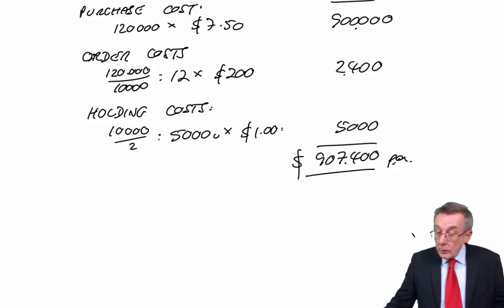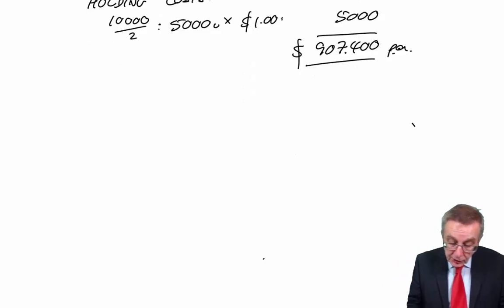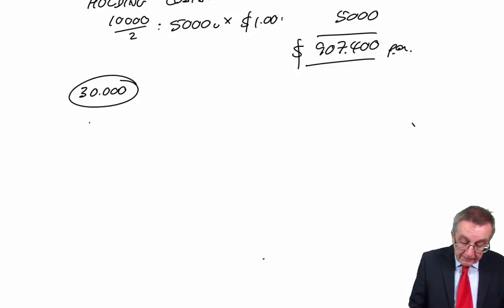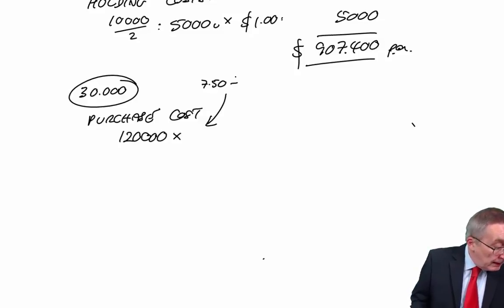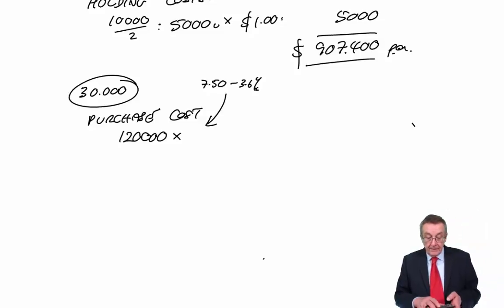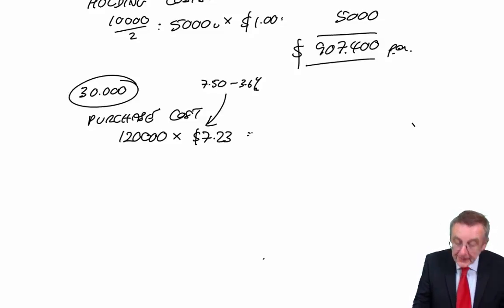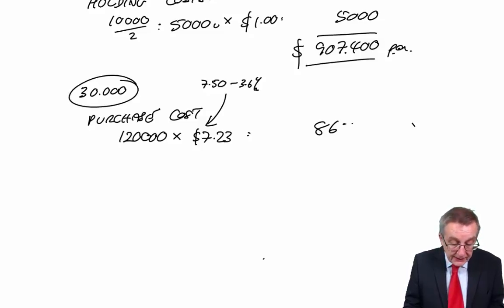We are ordering 10,000 each time at the moment, so the average inventory, 10,000 over 2 is 5,000 units. The cost of holding one unit for a year is a dollar. Total $5,000. So the total cost over the year of our current policy is $907,400. What are we trying to do? We're wondering if it might be cheaper to order 30,000 each time. So let's repeat the costings all over again. If we order 30,000 each time, the purchase cost will still need 120,000 a year. But the cost each time would have been $7.50, but we'll get a discount of 3.6%, which comes to $7.23.